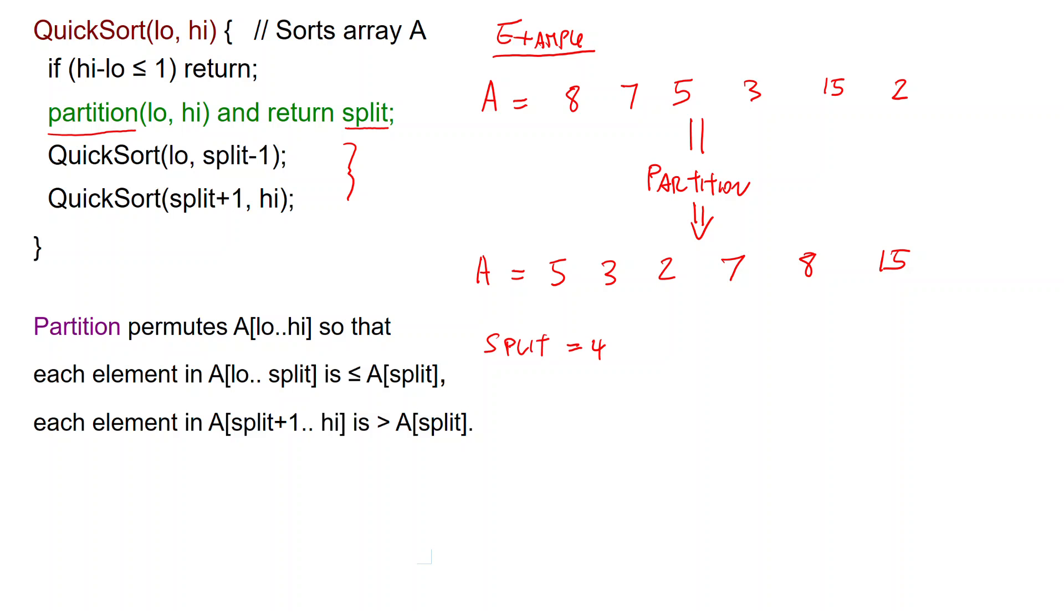This 4 corresponds to this 7 here. So 7 is put at the right place in the array and in fact we can see that these elements here, 5, 3, 2, are all at most 7, while these ones here, 8, 15, are all at least 7.